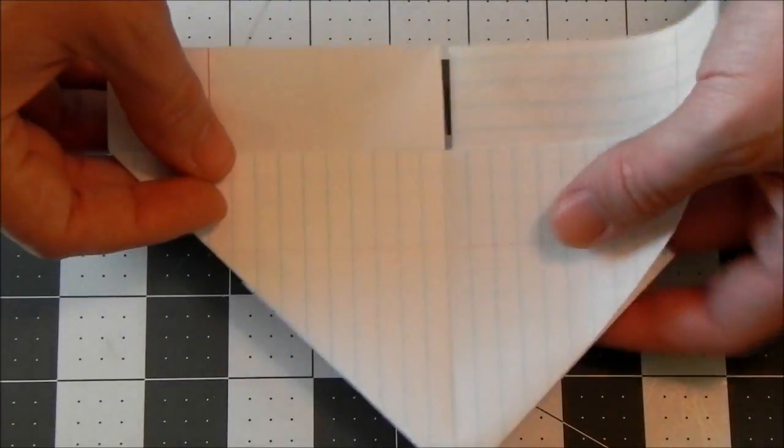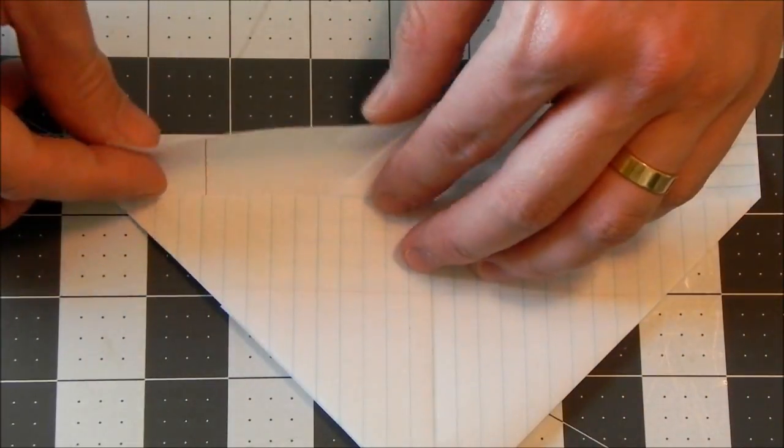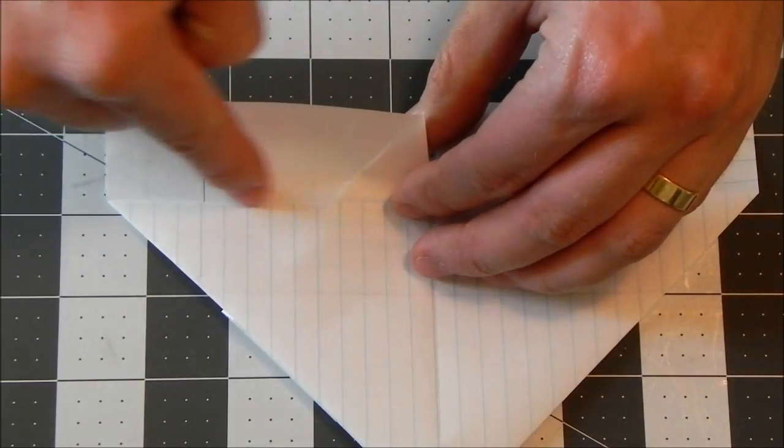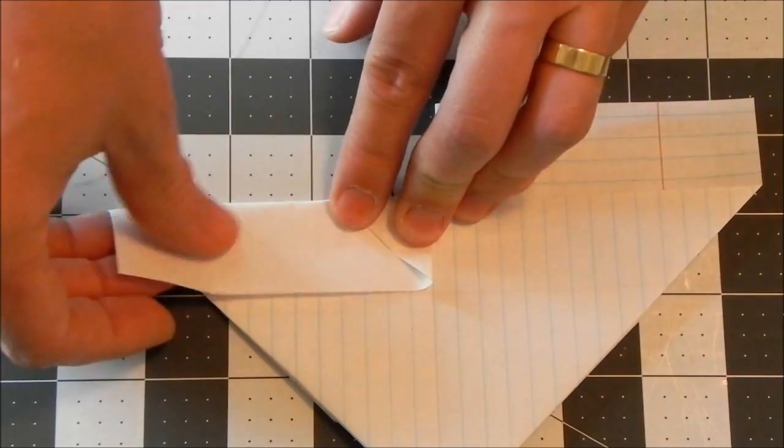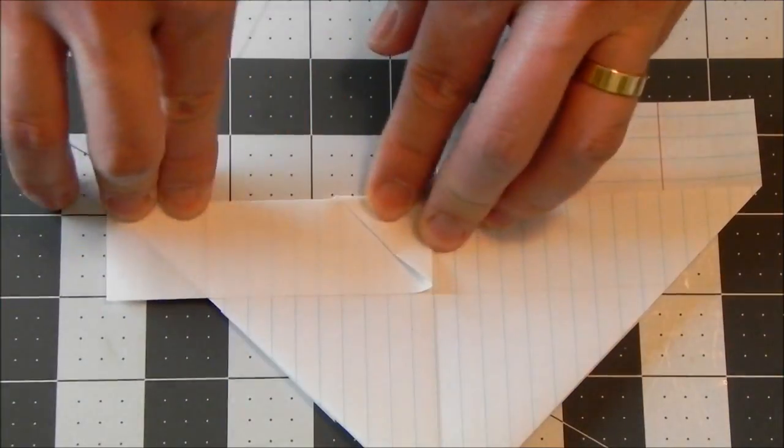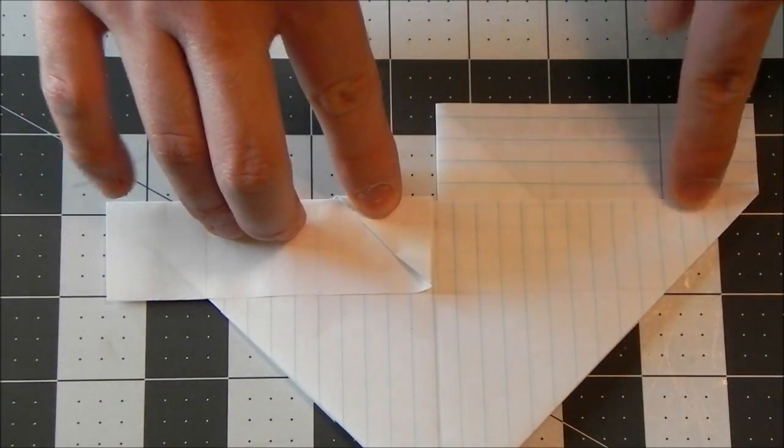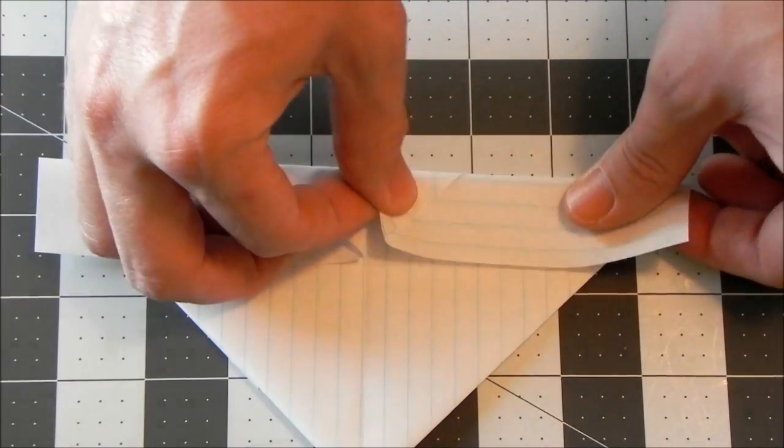Now what we'll do is we're going to turn it over and we're going to take this flap here and we're just going to fold it over that straight edge. So just fold it straight down. Not going down over that, but just right up to the edge of it. And we'll repeat on the other side.